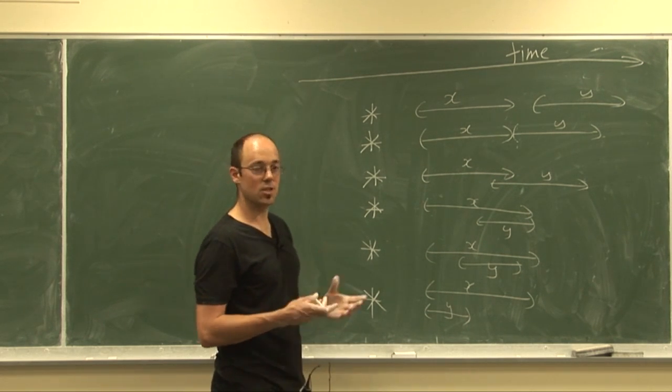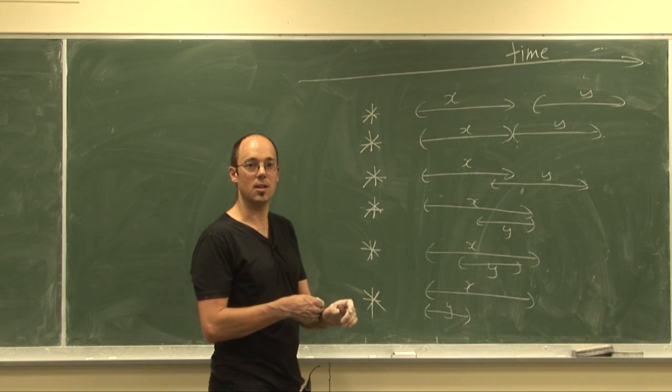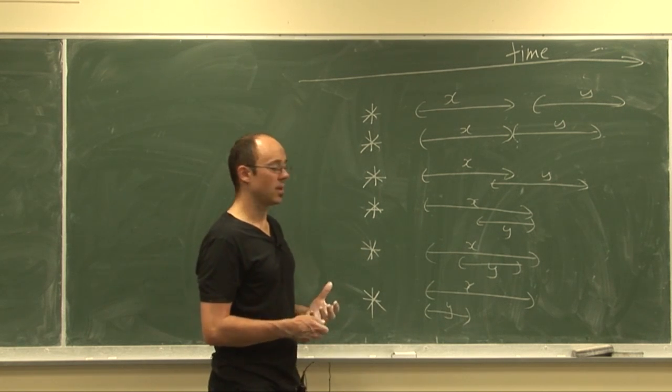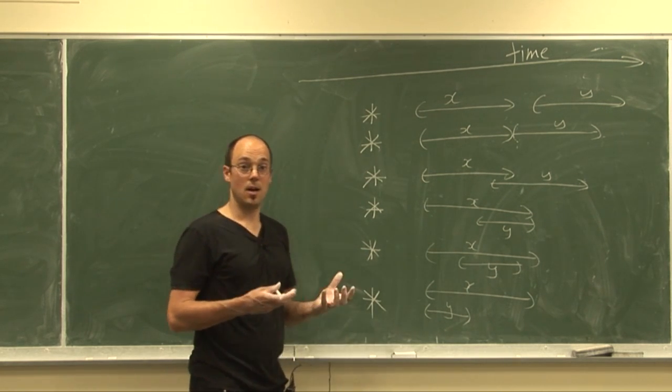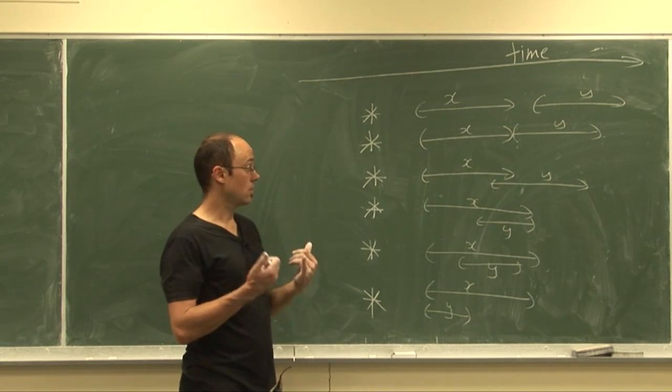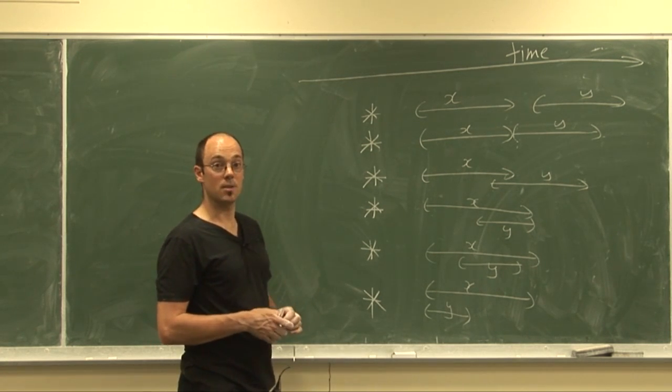occur at exactly the same time. In which case, we really get 13 different possible relationships. This algebra is called Allen's Interval Algebra and it's really used quite a lot to model qualitatively about temporal reasoning.